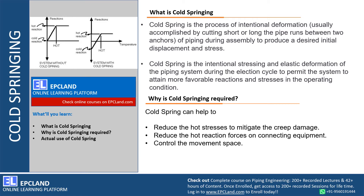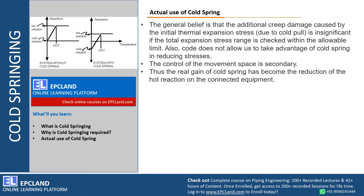Now let us see what is the actual use of cold spring. The general belief is that additional creep damage is caused by initial thermal expansion. We are talking about those piping systems which are prone to very high temperature, experiencing repeated high and low temperature cycles for longer periods. Those systems will be prone to thermal expansion stresses. To just mitigate that, we induce cold springing so that we can bring the stresses within the allowable limit.